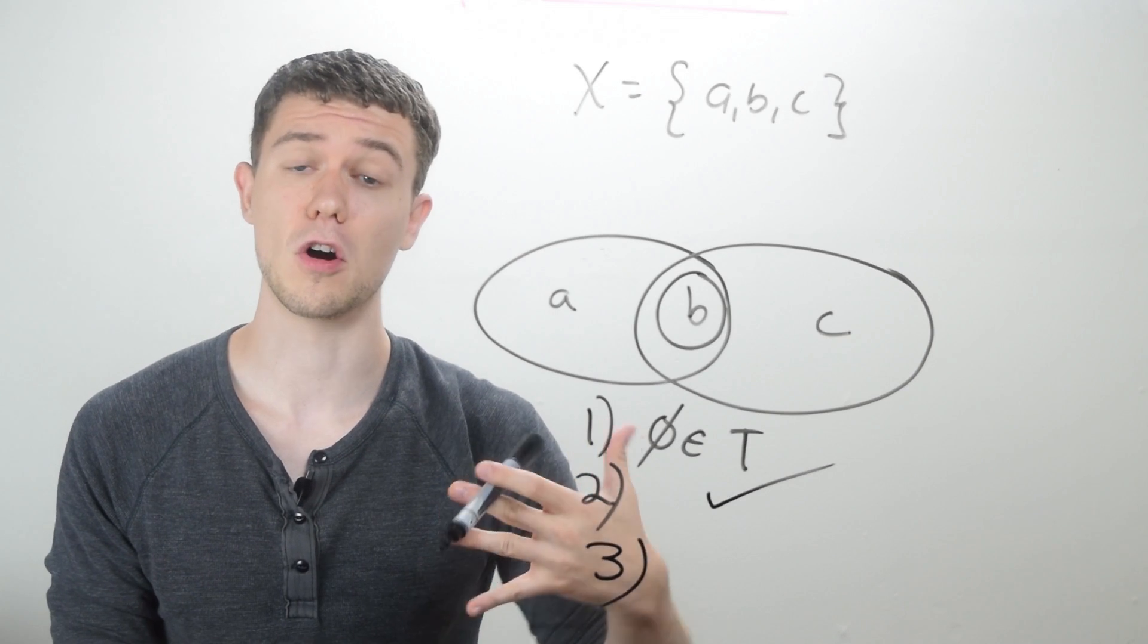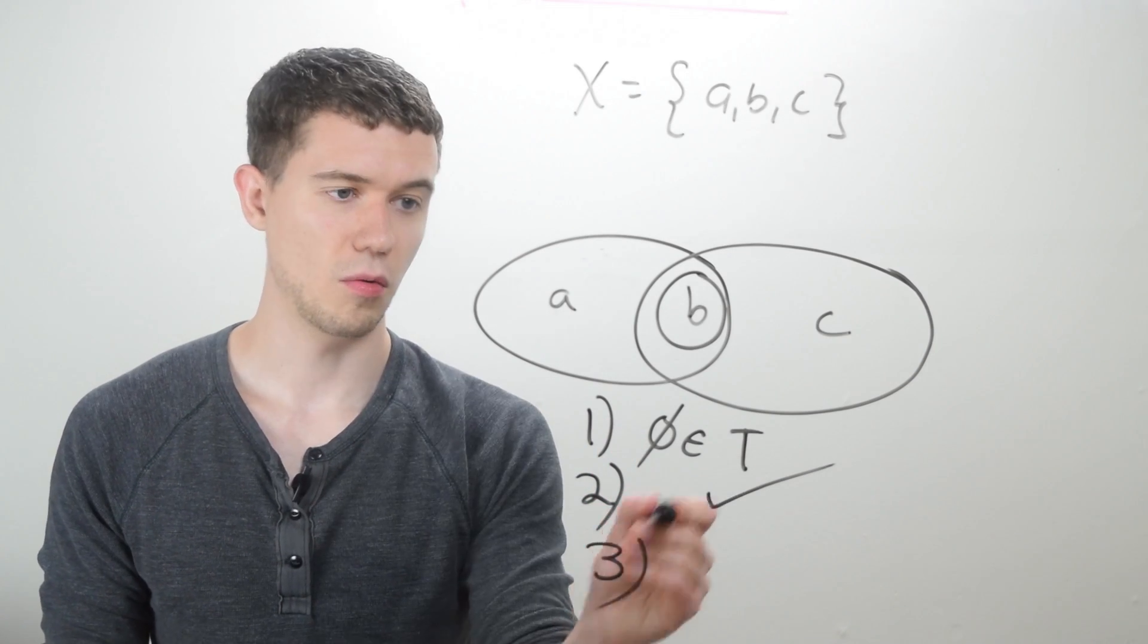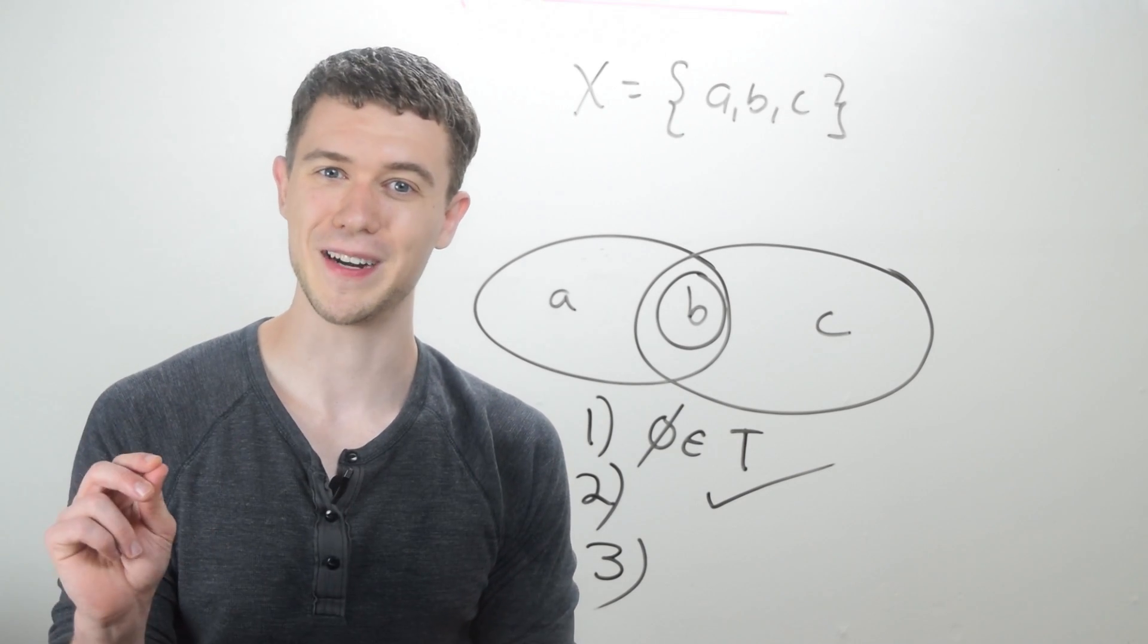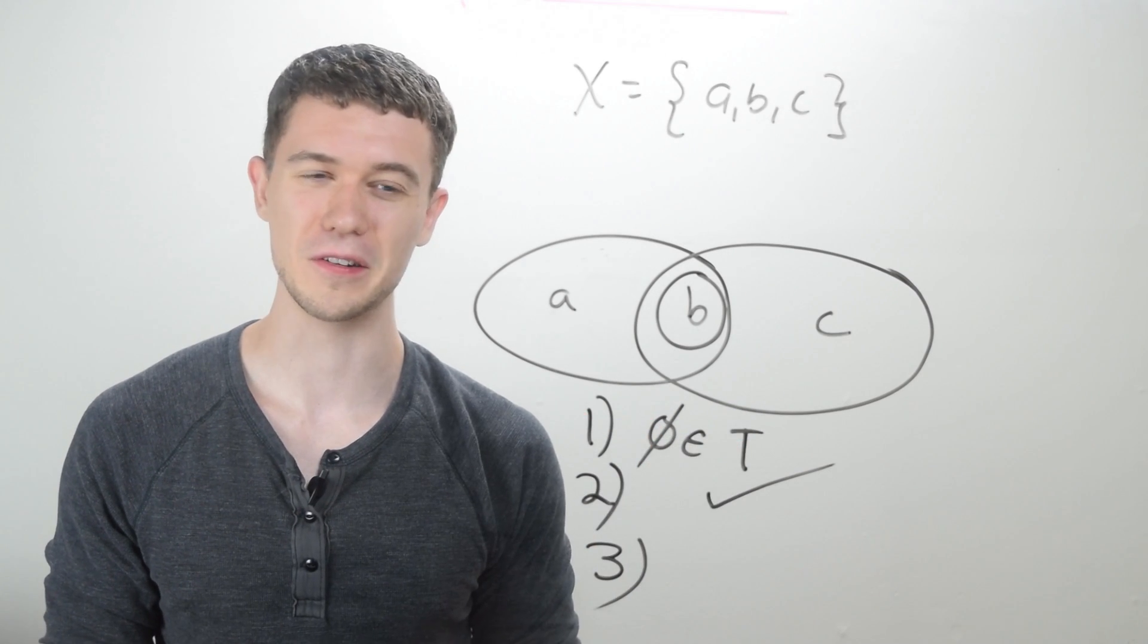And the third criterion is arbitrary unions. Well, if I try to union any of these things, we run into a problem. And maybe you already recognized I kind of skipped over the very first thing.